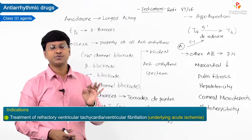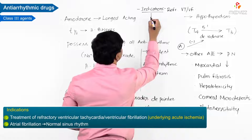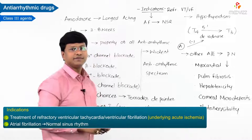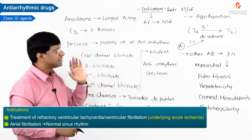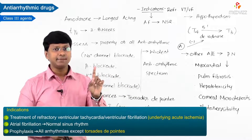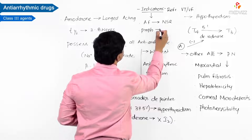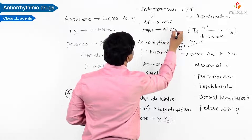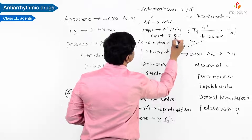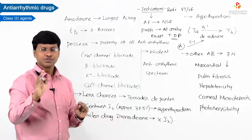Amiodarone is also safe to use in individuals with cardiomyopathy and atrial fibrillation to maintain normal sinus rhythm. Additionally, amiodarone can be used for the prophylaxis of almost all arrhythmias, except torsades de pointes.